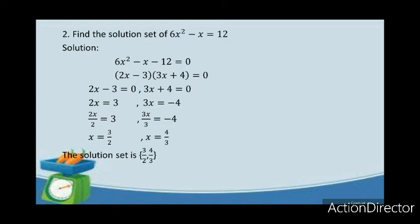The equation 6x squared minus x minus 12 equals 0 is factorable, and the result will be 2x minus 3 times the quantity of 3x plus 4 equals 0. We already get the factored form of the equation and we will get the value of x. 2x minus 3 equals 0 becomes 2x equals 3; dividing both sides by 2, the result will be x equals 3 over 2.